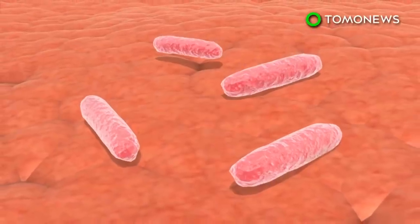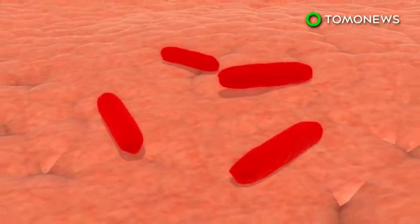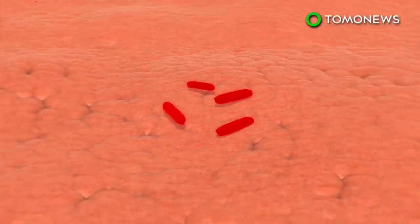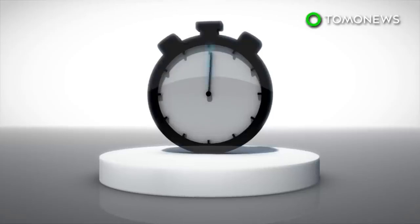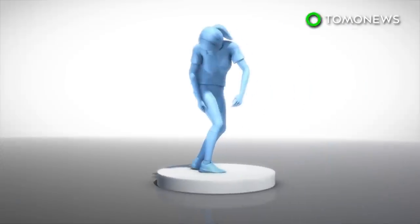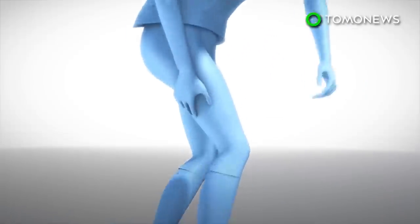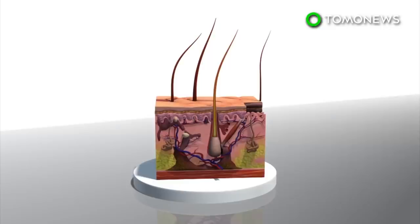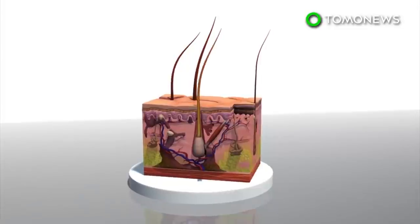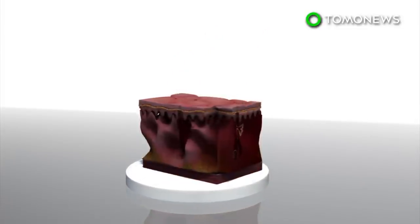According to the Centers for Disease Control and Prevention, necrotizing fasciitis is a serious bacterial infection that spreads quickly and kills the body's soft tissue. People with flesh-eating bacteria usually begin to display symptoms within a couple of hours after an injury. Symptoms may seem like another injury or illness. Some people complain of a pulled muscle-like pain or soreness.